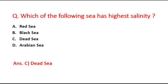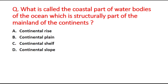Next question: What is called the coastal part of water bodies of the ocean which is structurally part of the mainland of the continents? Option A is continental rise, B is continental plains, C is continental shelf, and D is continental slope. The right answer is option C, continental shelf.